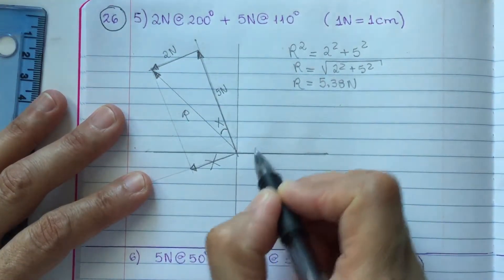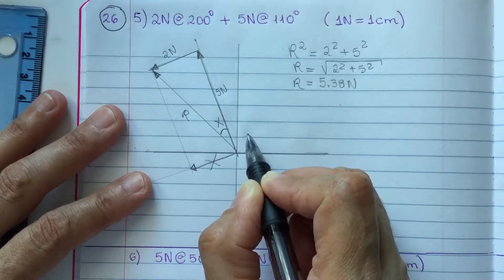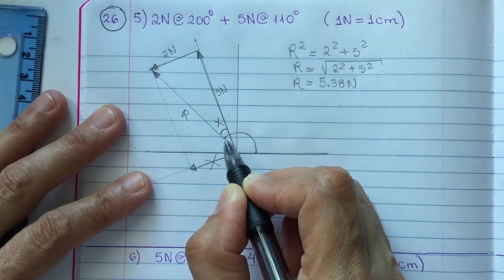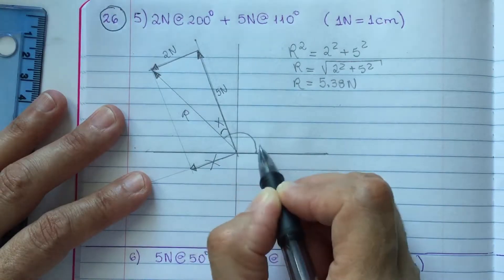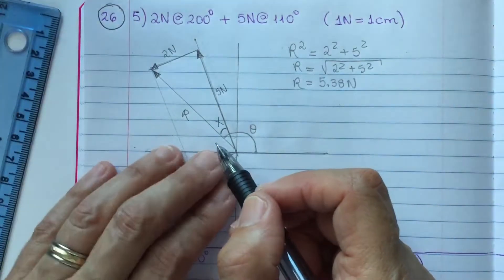We have to count counterclockwise. So, from here, and you are going to walk in circles until you find R and we stop. So, right here. So, all this is my theta or the direction of the resultant.